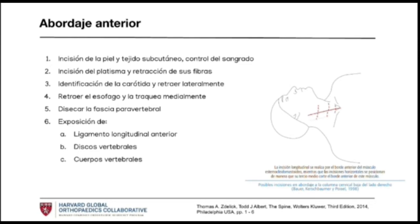Transverse incisions can be made if they are multilevel. It is advisable to make transverse incisions to the sternocleidomastoid. The incision is made in skin and subcutaneous cellular tissue, carefully cauterizing the subcutaneous vessels to avoid hematomas. The first structure we find and sometimes dissect or cauterize is the platysma. Then we make a blunt incision either with gauze or digitally to retract the trachea and esophagus medially and the vessels laterally. We immediately find the pretracheal fascia, which we incise through blunt dissection.